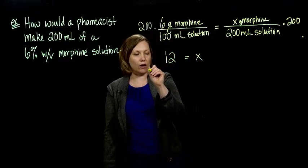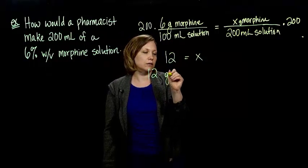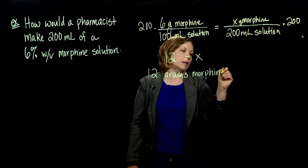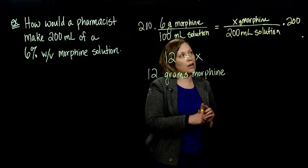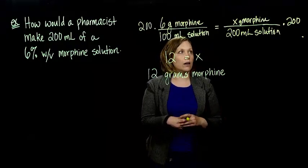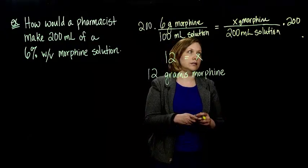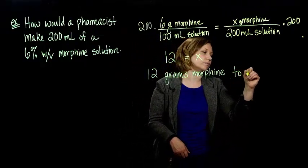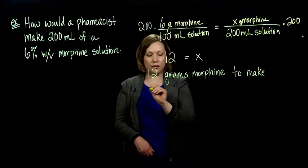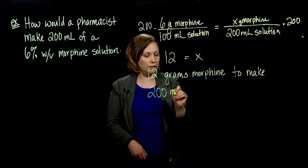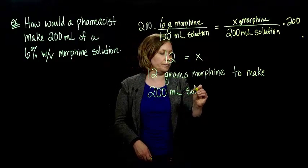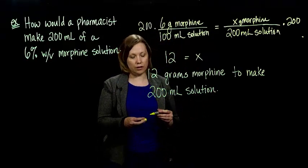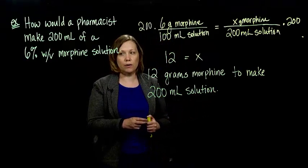We need 12 grams morphine. And then how much of our diluent do we need? We need 200 grams in to make 200 milliliters of solution. So 12 grams in 200 milliliters of solution. And then we have the answer.